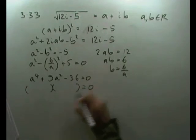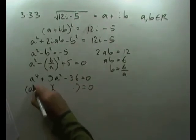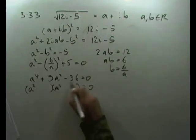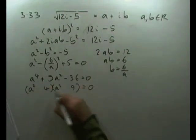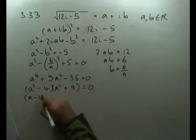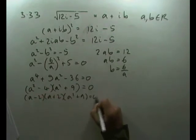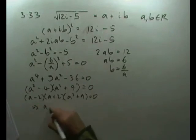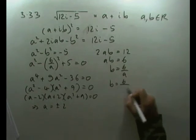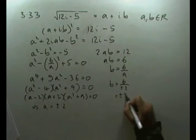Factorizing that quadratic in a² and the constant: (a² + 9)(a² - 4) = 0. The first won't give real roots, so (a - 2)(a + 2) = 0, which means a = ±2. Putting it back, b = 6/(±2) = ±3.